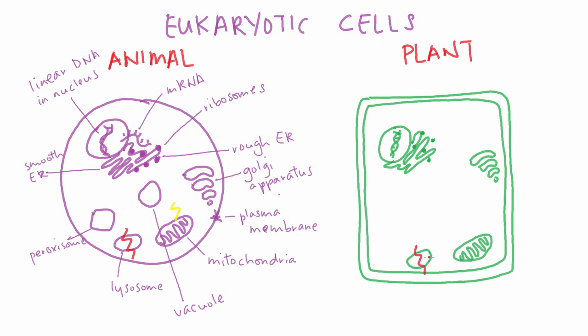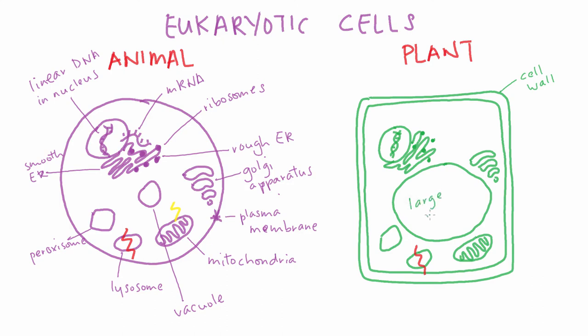In addition, plant cells also contain large vacuoles. These push tightly up against the cell wall like an inflated balloon, making the cells turgid. If the plant doesn't have enough water, the vacuoles will deflate and the plant will wilt.